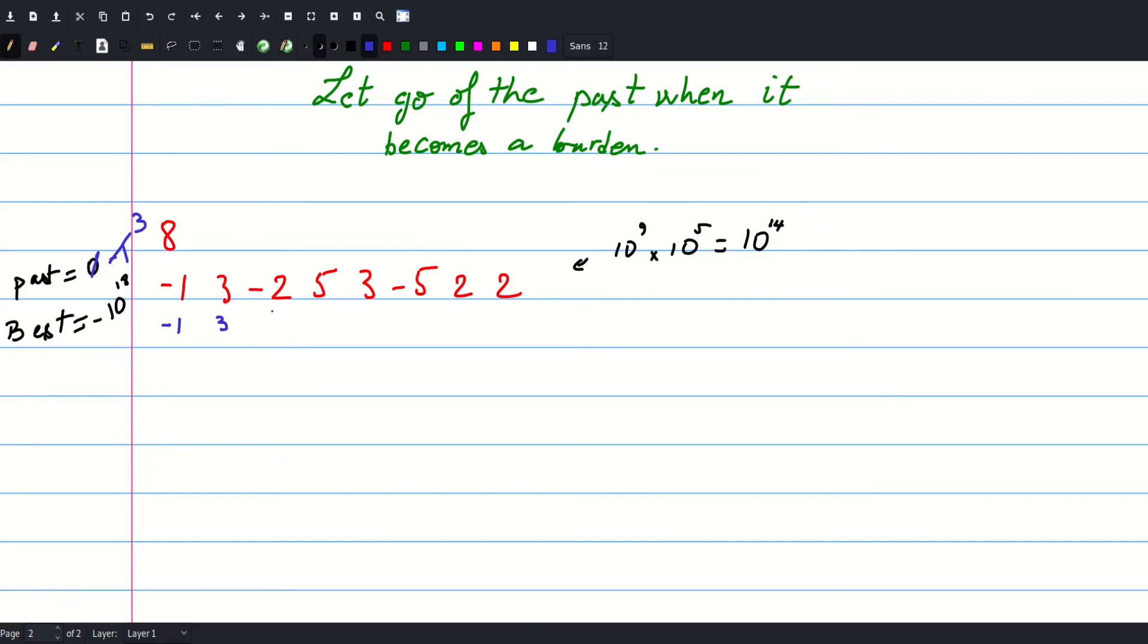When we get to two we ask ourselves again: is it better to have negative two by itself or to carry the past? Here carrying the past is better so that becomes one and our past becomes one. Here at five we see that carrying the past is better so this becomes six and that's why the answer was this whole interval when we got to five. Now at three same thing, the past is now six.